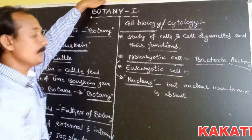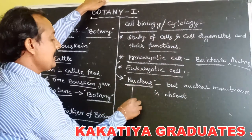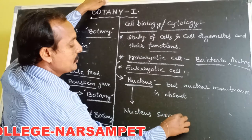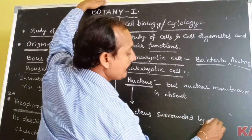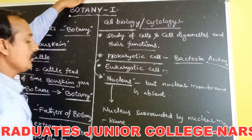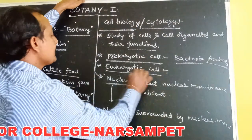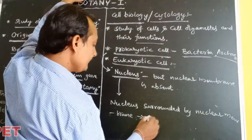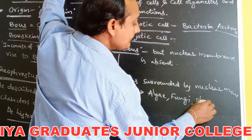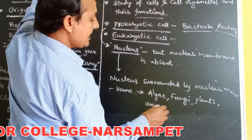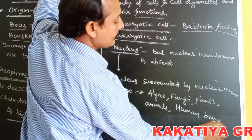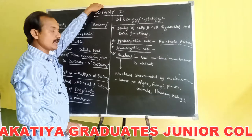The second type of cell is the eukaryotic cell. In eukaryotic cells, the nucleus is present and the nucleus is surrounded by a nuclear membrane. Such cells are called eukaryotic cells. Examples include algae, fungi, plants, animals, and human beings.